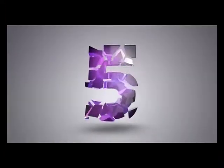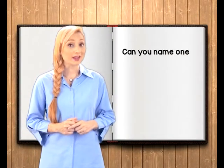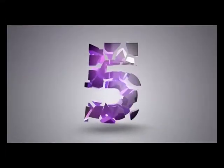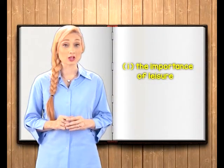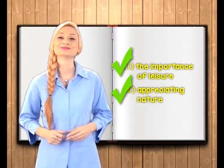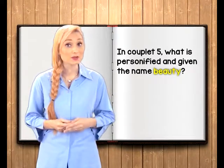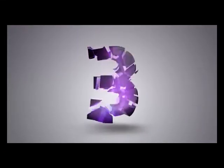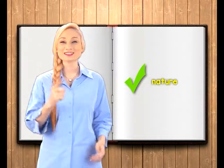Now that the poem is fresh in your mind, I'm going to ask you some simple questions about it. Ready? Where is this poem set? It's set in the countryside. Can you name one of the themes of this poem? If your answer is either the importance of leisure or appreciating nature, then you are correct. In couplet 5, what is personified and given the name 'beauty'? And it is... that's right, nature.